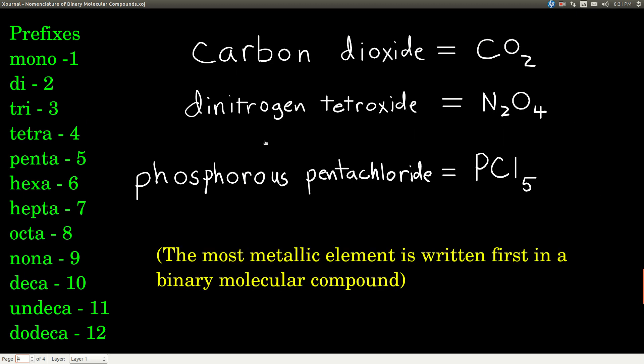Going the other way, from the name to the formula, if we see the words carbon dioxide, carbon is C. Oxide means oxygen. Di means there's two oxygens because there's no prefix in front of the carbon. We know that there's only one.